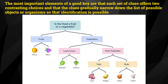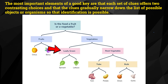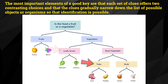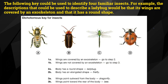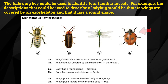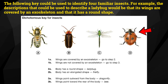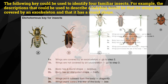The most important elements of a good key are that each set of clues offers two contrasting choices, and that the clues gradually narrow down the list of possible objects or organisms so that identification is possible. The following key could be used to identify four familiar insects. For example, the description used to describe a ladybug would be that its wings are covered by an exoskeleton and that it has a round shape.